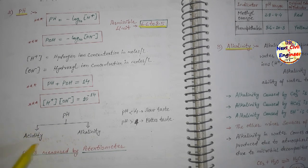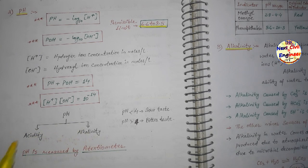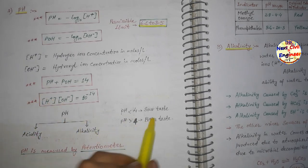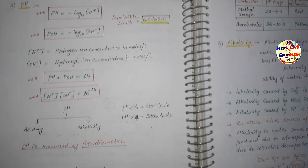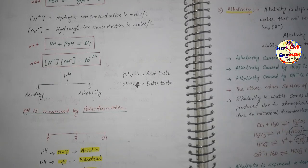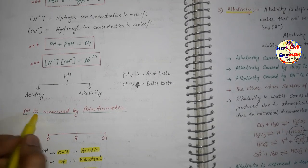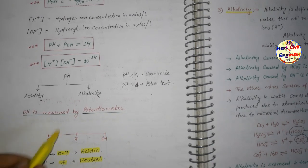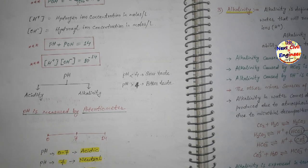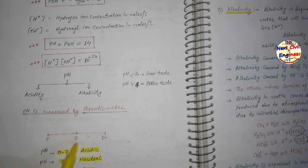pH can be viewed in two ways: acidity and alkalinity. If pH is less than 4, the taste will be sour; if pH is greater than 4, the taste will be bitter. pH is measured by a potentiometer. The pH scale ranges from 0 to 14. pH 7 is neutral; 0 to 7 is acidic; 7 to 14 is basic in nature.